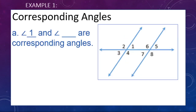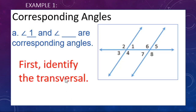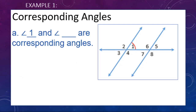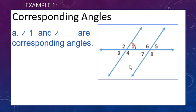Let's look at some examples. Angle one and angle blank are corresponding angles. First, we identify the transversal — the line that intersects the other two lines. We're looking at angle one and which angle at the lower intersection matches it. It is angle five, so angle one and angle five are corresponding angles.